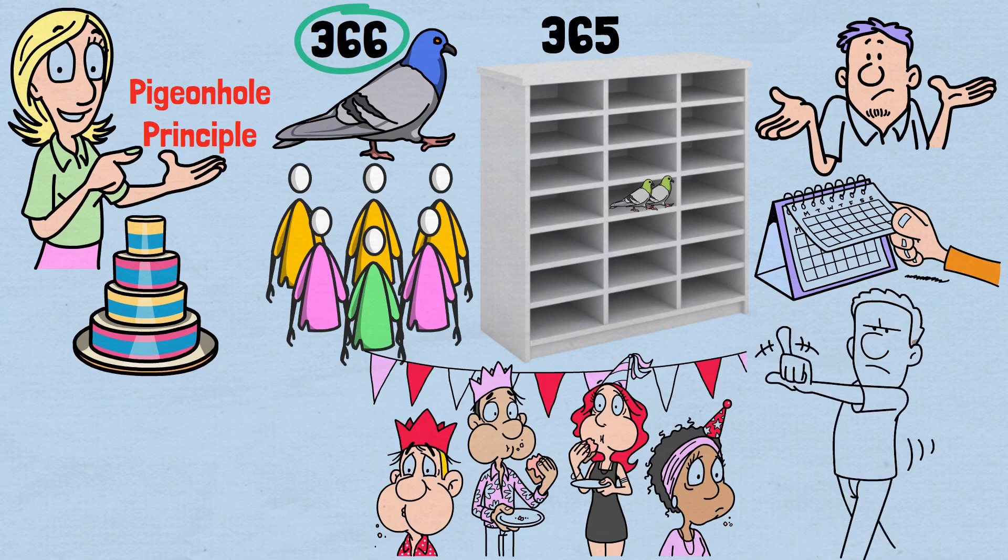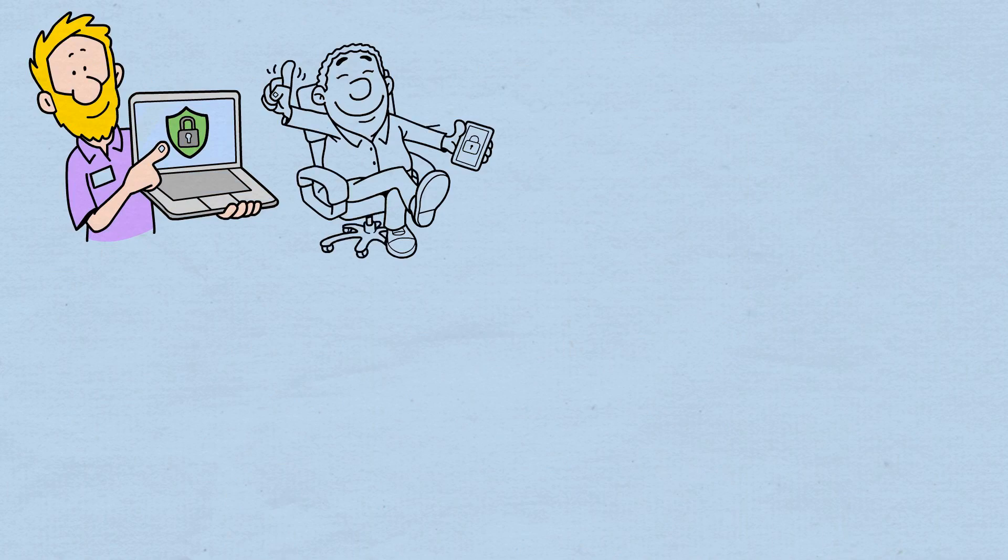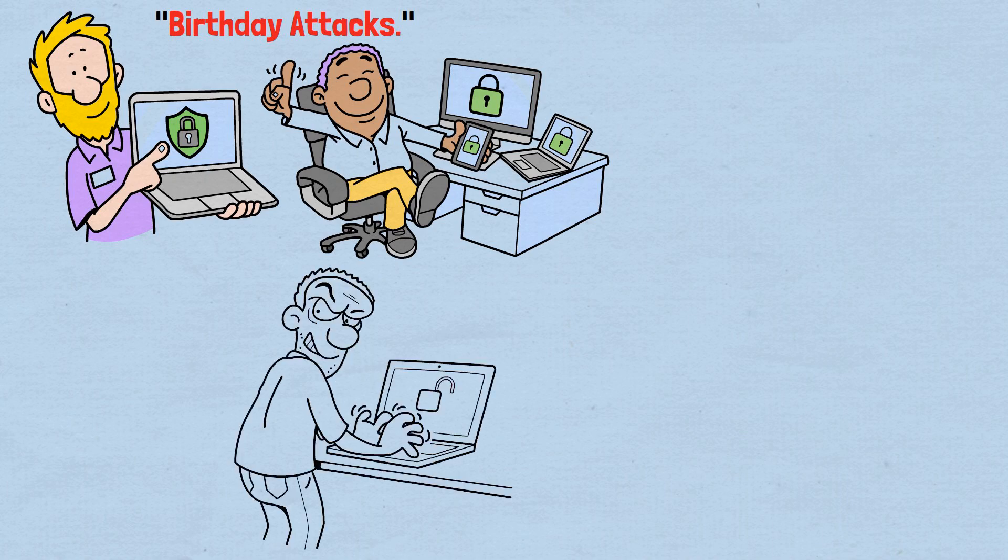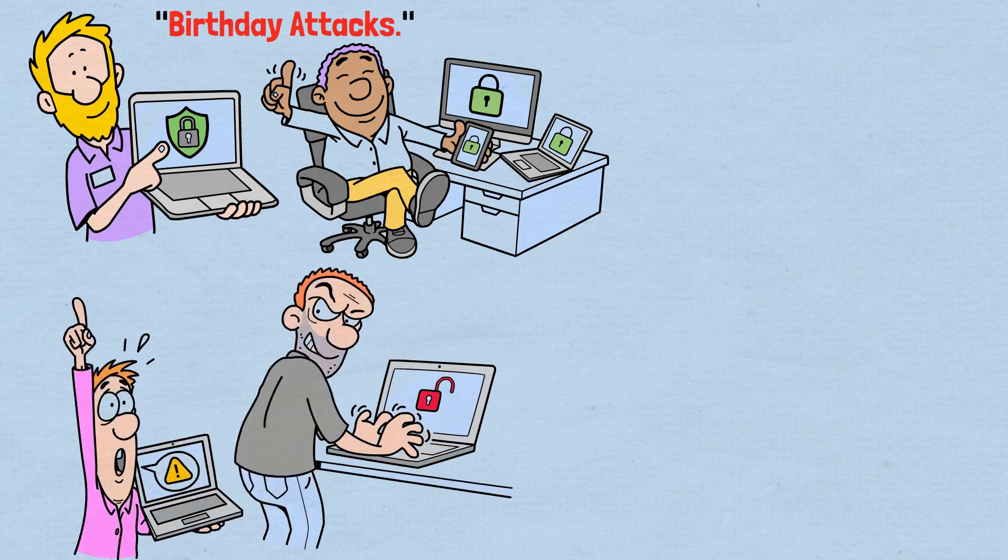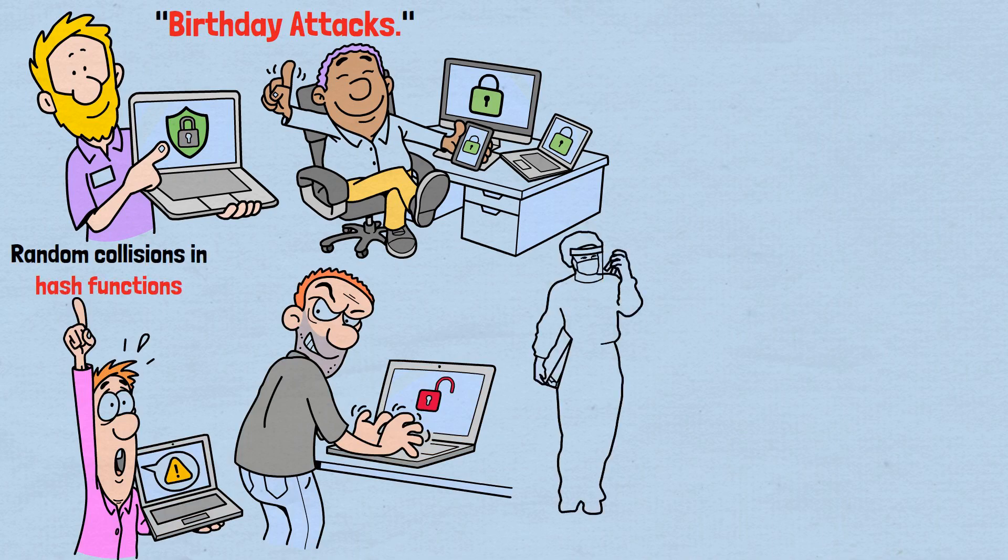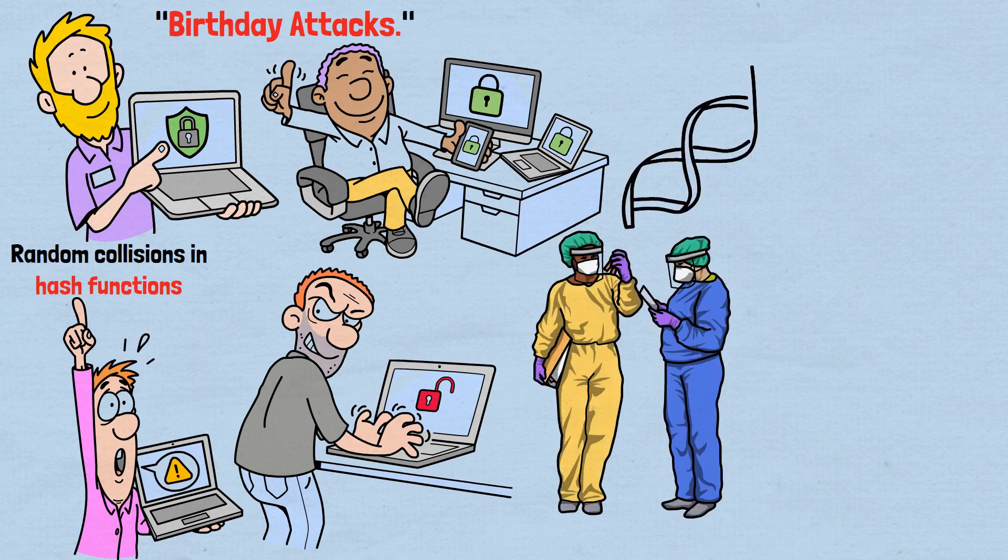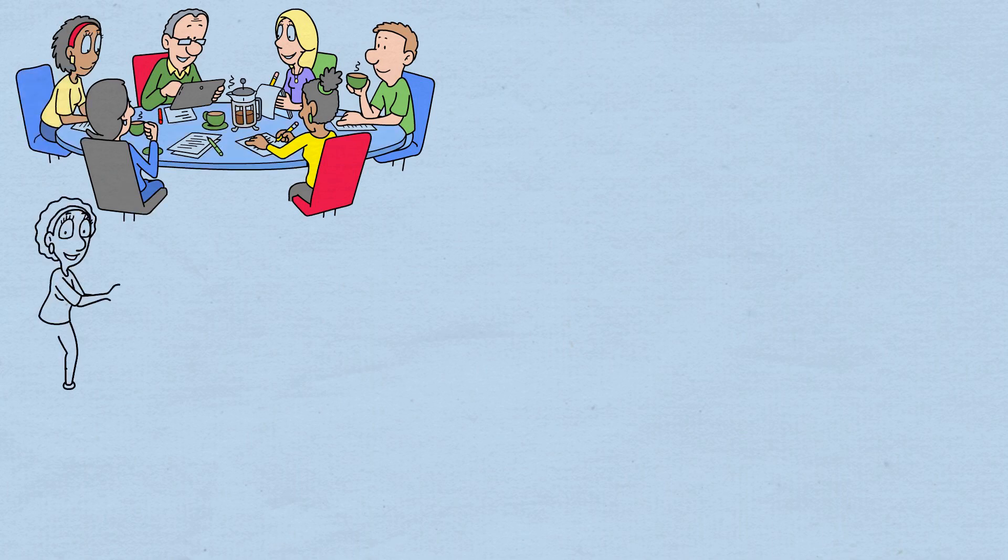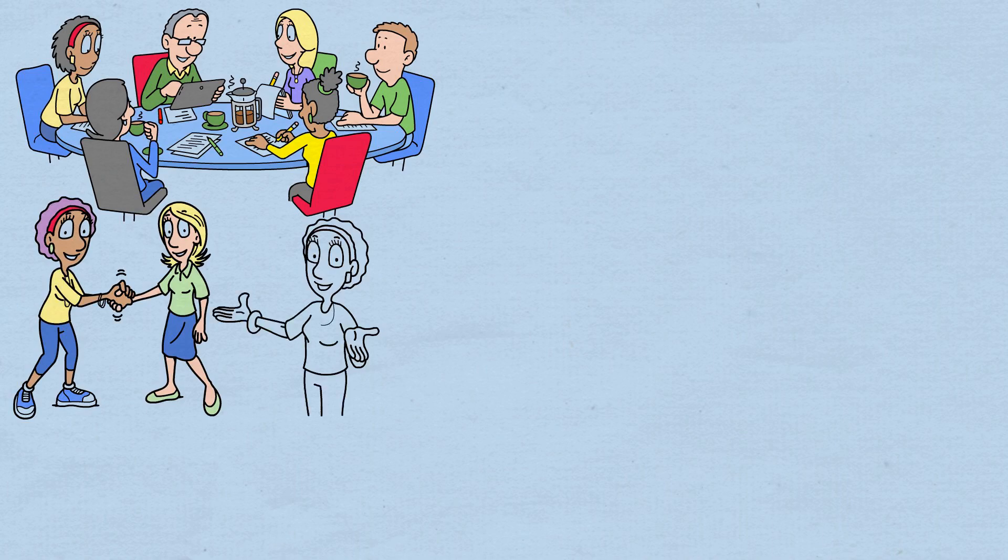The birthday paradox isn't just a mathematical curiosity. It appears in surprising places. In computer security, this paradox forms the foundation of what cryptographers call birthday attacks. These attacks exploit the unexpectedly high probability of random collisions in hash functions. In genetic research, scientists must account for this paradox when calculating the significance of matching DNA patterns. Even in your social life, this paradox explains why coincidences, like meeting someone who knows your friend from another city, happen far more frequently than you'd expect.